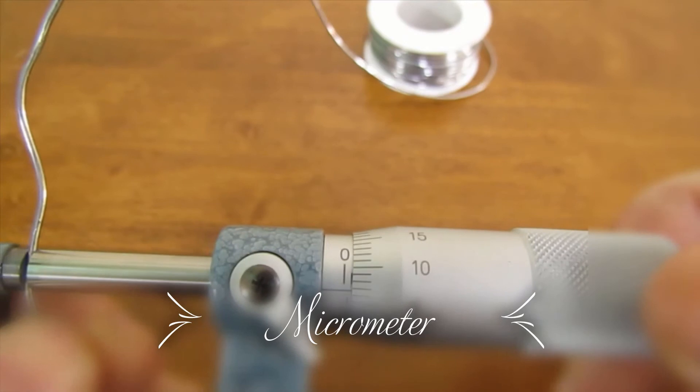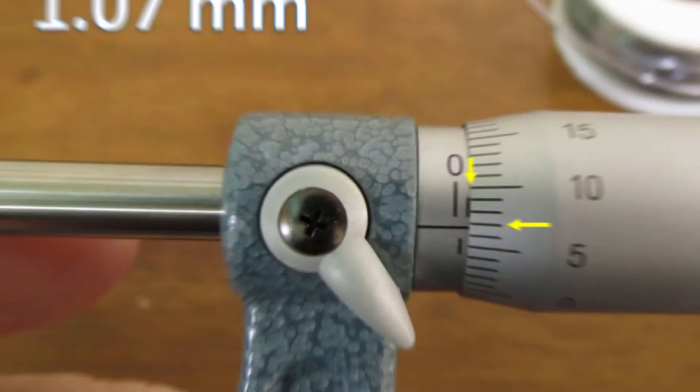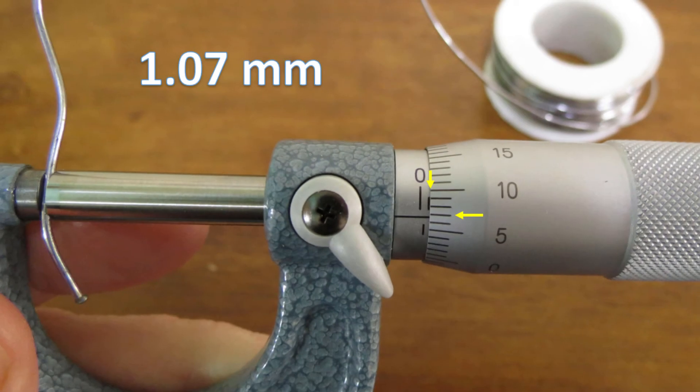Now, let's take the readings. In this example, the diameter of the shown wire is 1 plus 0.07 millimeters.